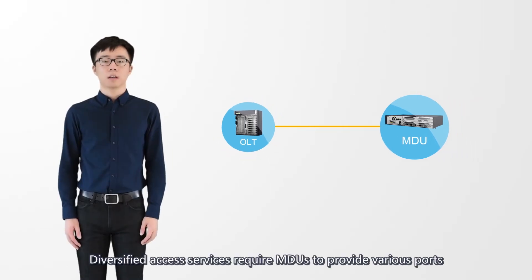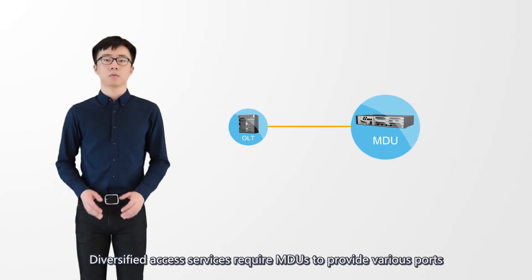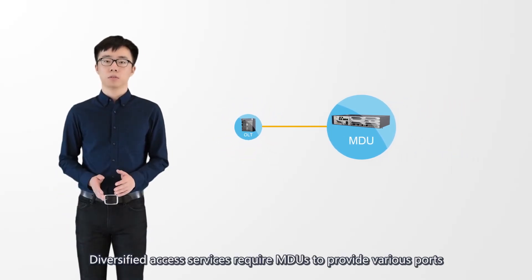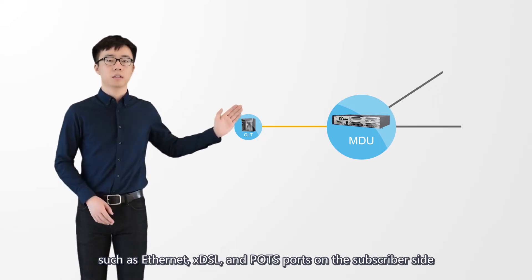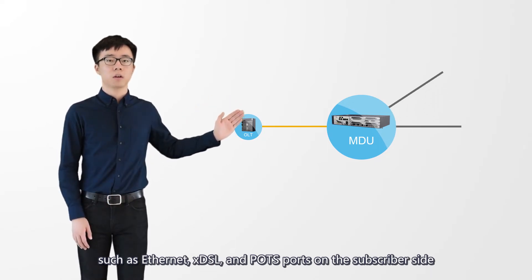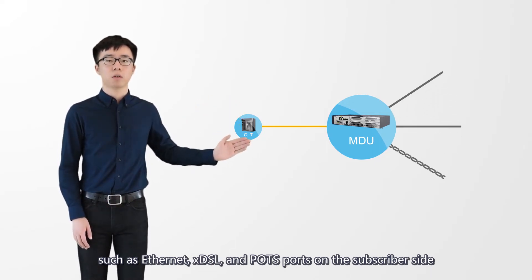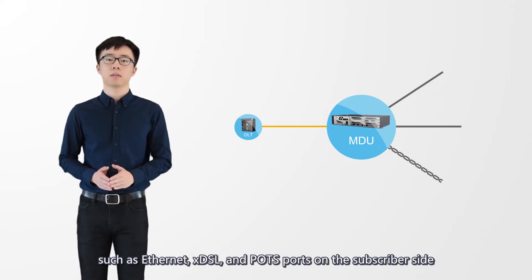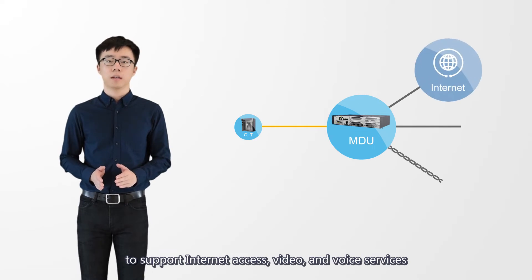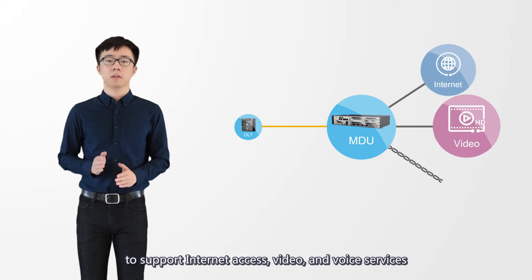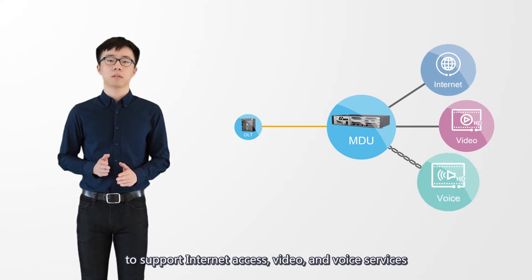Diversified access services require MDUs to provide various ports, such as Ethernet, XDSL, and POTS ports on the subscriber side, to support internet access, video, and voice services.